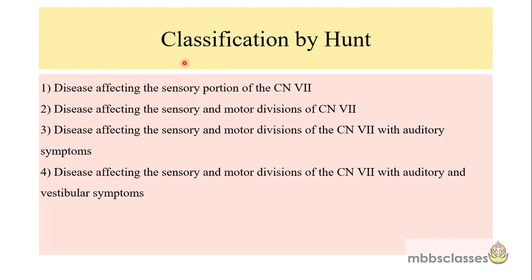There is a classification of Ramsay-Hunt syndrome given by Hunt into four stages. Stage 1 is when the disease affects only the sensory portion of the facial nerve. Stage 2 is when it affects both the sensory and motor division of cranial nerve 7. Stage 3 is when, along with cranial nerve 7, the patient has auditory symptoms. Stage 4 is when the sensory and motor division of cranial nerve 7 is involved along with auditory and vestibular systems — that is, both the 7th and 8th nerves are completely involved.